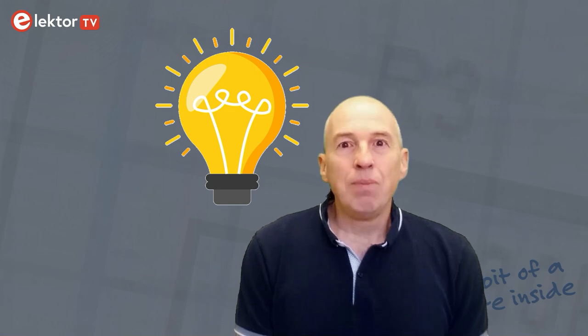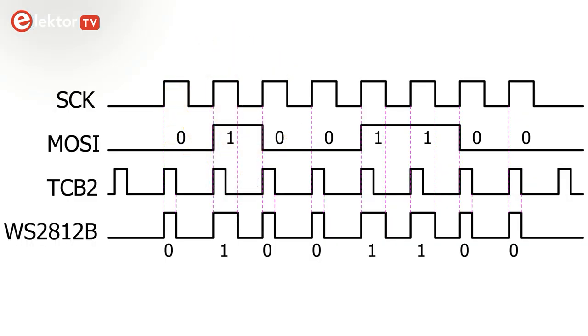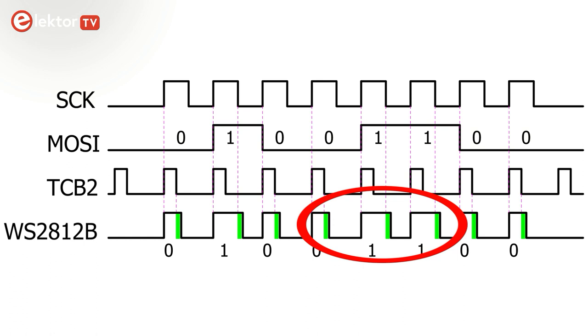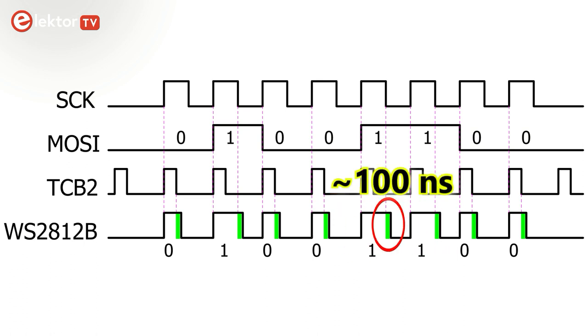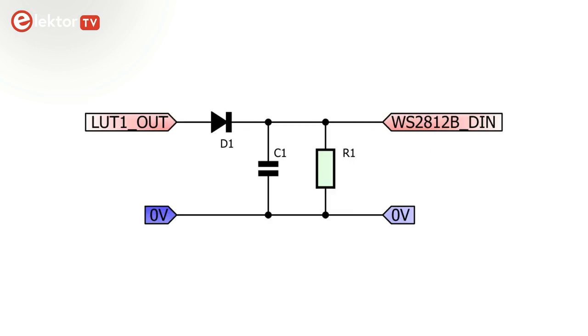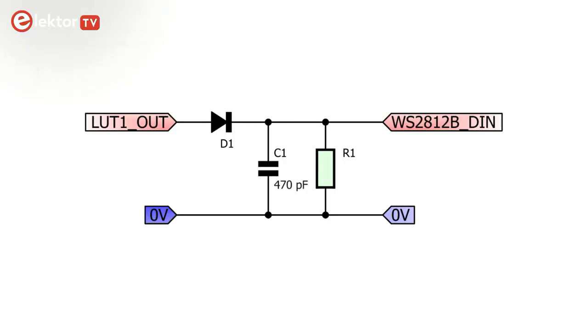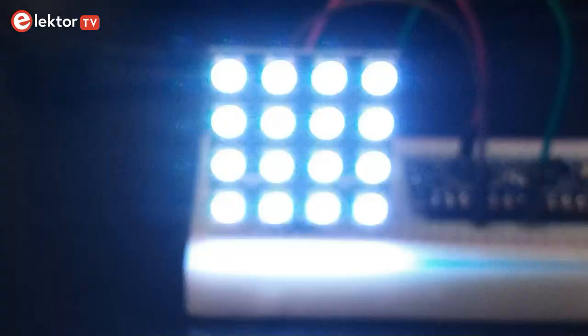While preparing this video, I suddenly had a bright idea. Instead of slowing down the MCU, why not try to delay the falling edges of the bitstream to make the pulses a bit longer? A 100 ns delay might do the trick. Therefore, I added an RC delay network to the bitstream, and after some tweaking, I got it to work. A 470 pF capacitor with a 200 to 500 ohm resistor in parallel did the trick. I settled for 390 ohms, a value in between. The diode ensures that rising edges are not delayed. With this little network, the LED driver works at full speed.